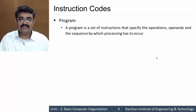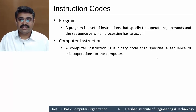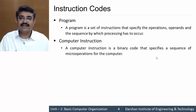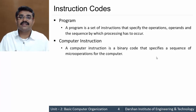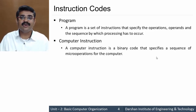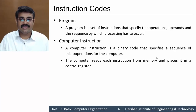The sequence by which processing has to occur means the sequence of instructions to be written to get our desired result. A program is made up of computer instructions. A computer instruction is a binary code that specifies the sequence of micro operations for the computer — for example, to perform addition: fetching data from memory, storing it into a register, performing the addition, and storing the result back to memory.